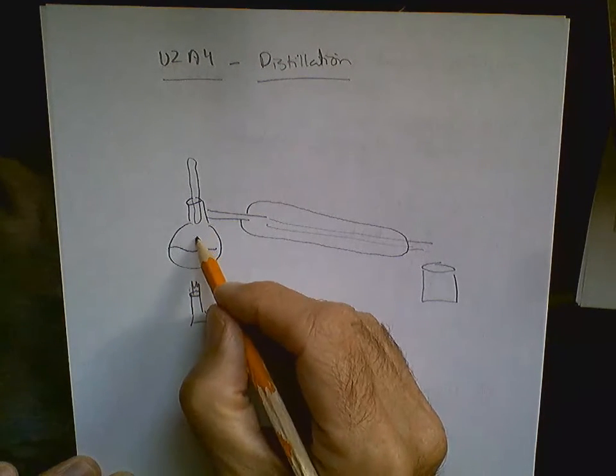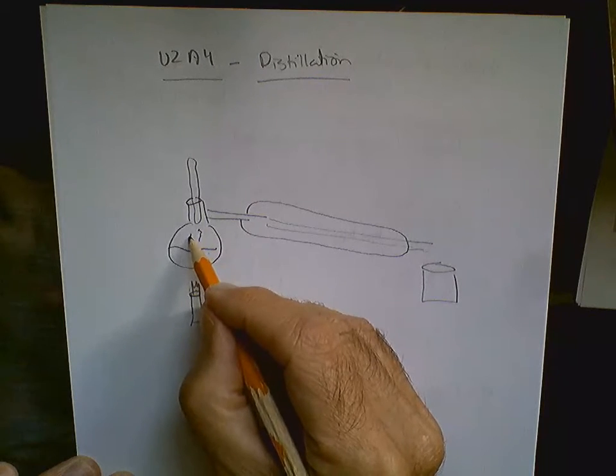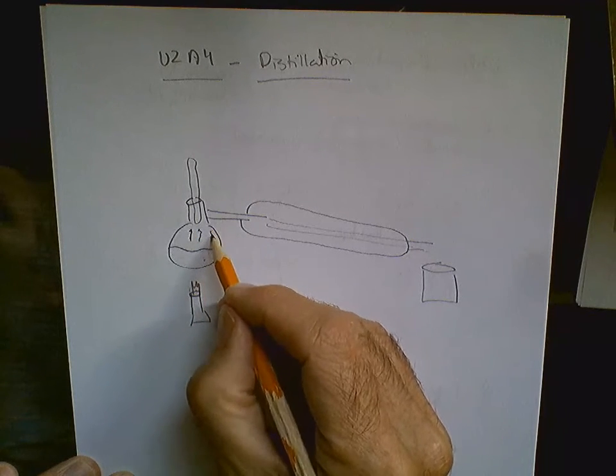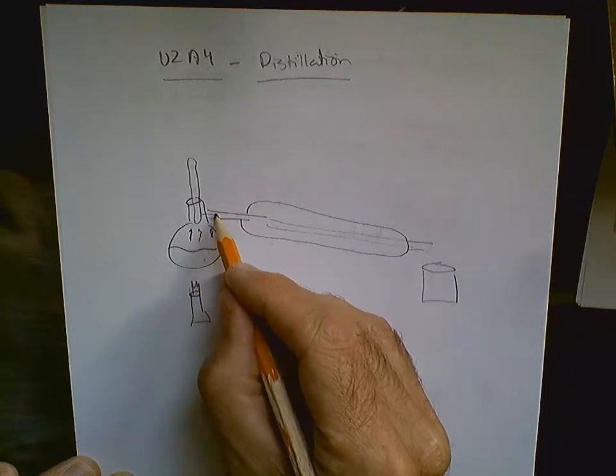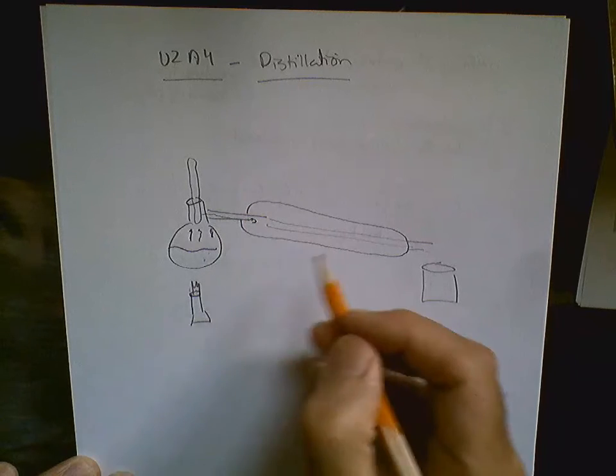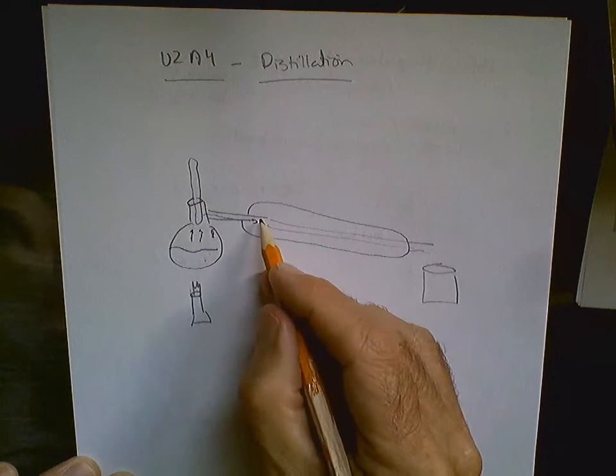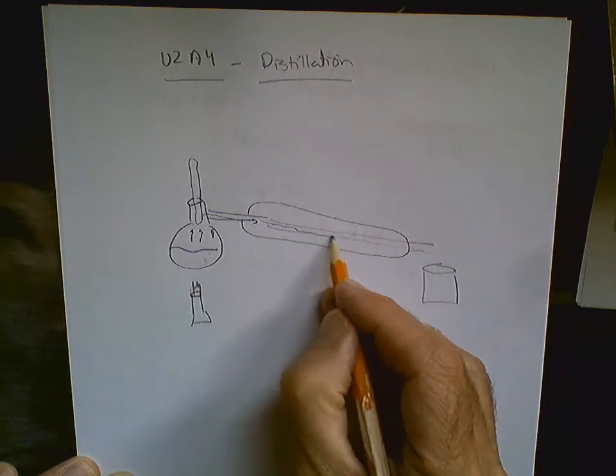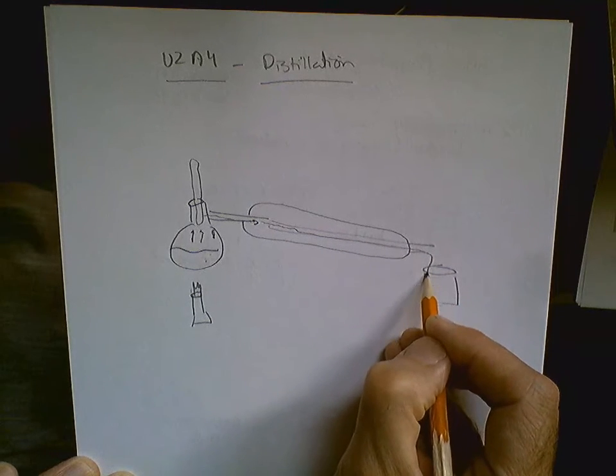As you gently heat this up, the alcohol vapor comes off and goes through a condensing tube. You run cold water through this tube and it condenses all the vapor into liquid alcohol which comes off.